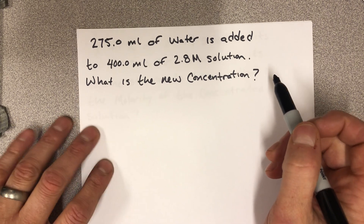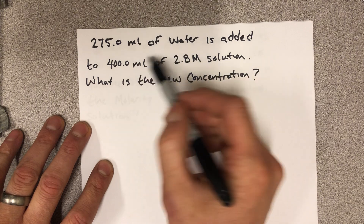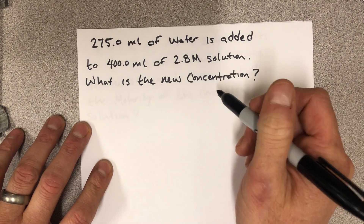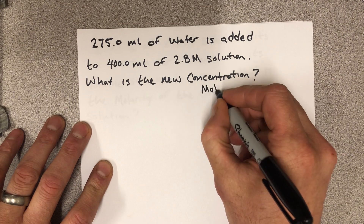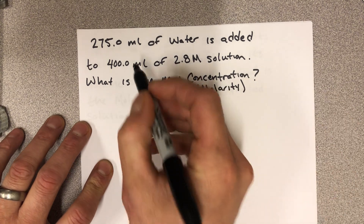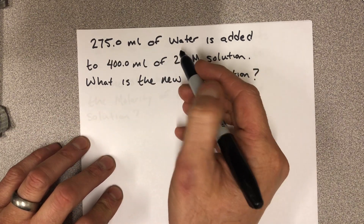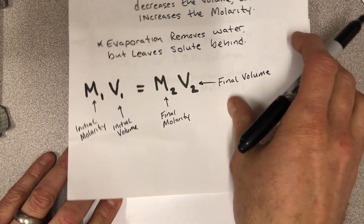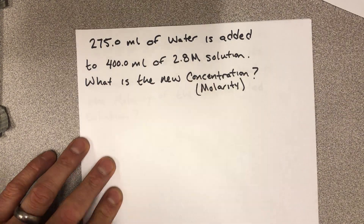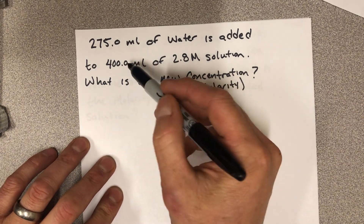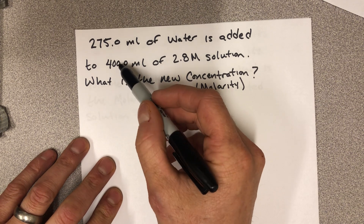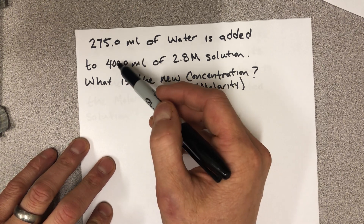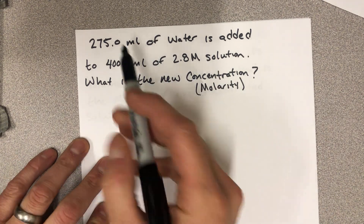Here's a typical practice problem: 275 milliliters of water is added to 400 milliliters of an existing 2.8 molar solution — what is the new concentration? One key thing to remember: the amount of water added is never one of the volumes in the equation. We start with 400 mL and add 275 mL, giving a total final volume of 675 milliliters.